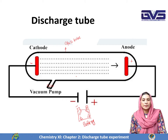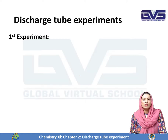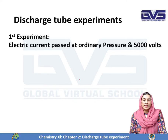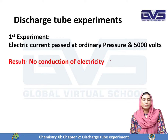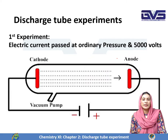Now we will look at which experiments were conducted in this discharge tube. In the first experiment, electric current was passed at ordinary pressure — like one atmosphere, one Torr — and the voltage applied was around 5,000 volts. What was the result? There was no result, no conduction of electricity. The discharge tube remained as it was — no reaction, no glow, nothing inside the discharge tube.